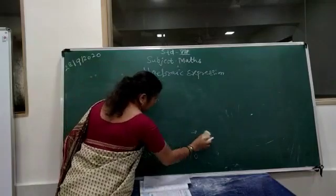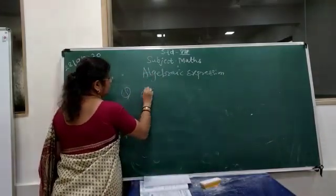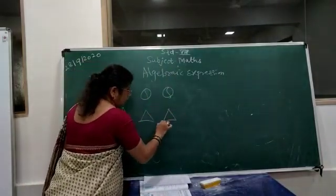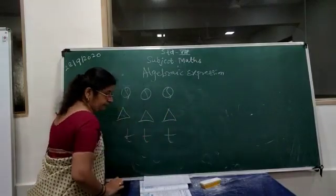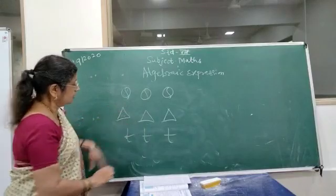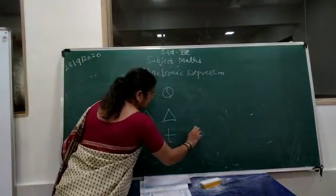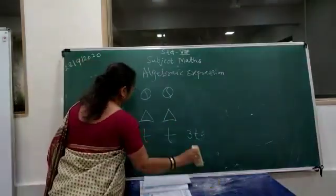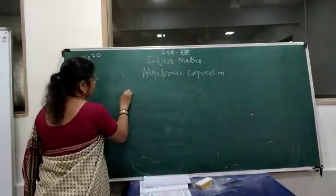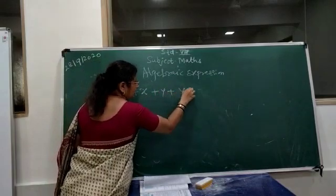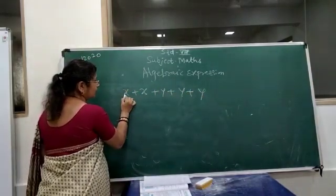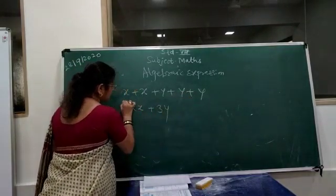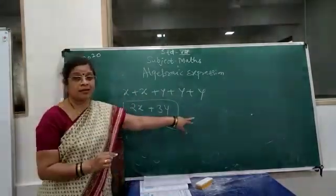Now, looking at more examples: suppose there are 3 balls — you write 3 balls. If 3 triangles are there, you write 3T. In this also, variables are present. Another example: X plus X plus Y plus Y plus Y plus Y simplifies to 2X plus 3Y. So this is again an algebraic expression.